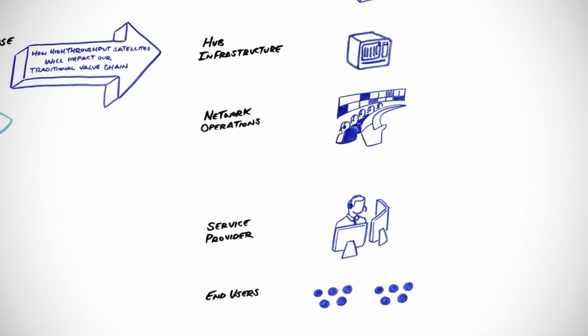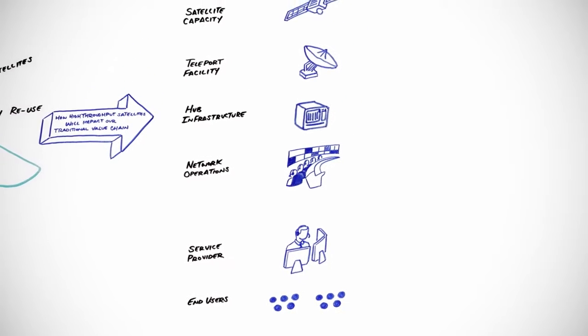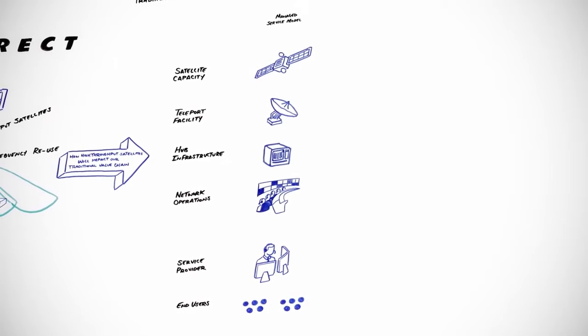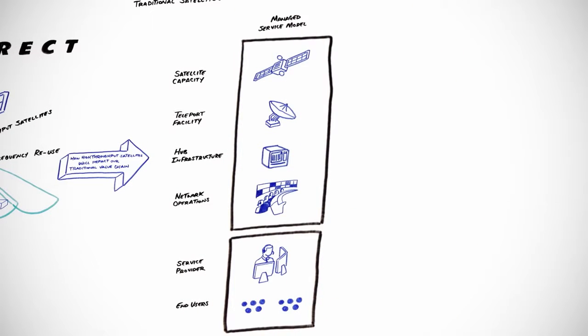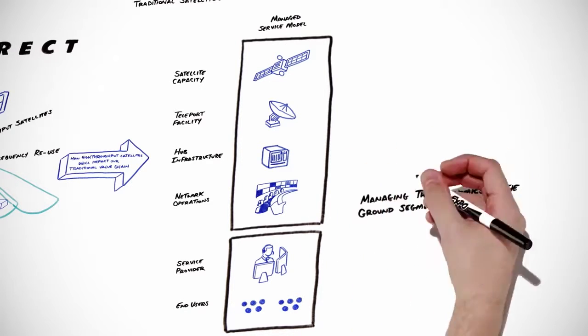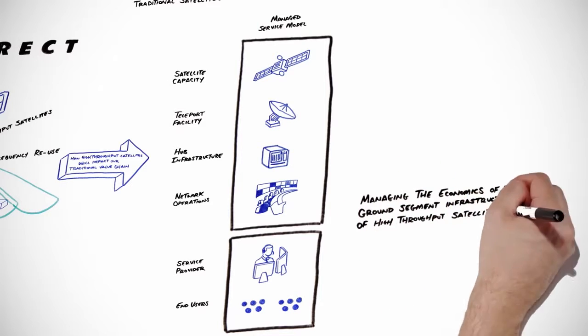The first high throughput satellite offerings that emerged were based on a managed service model. The satellite operator owns and operates all the infrastructure, and the service provider offers a managed service to end users. In this model, satellite operators are managing the economics of the ground segment infrastructure of high throughput satellites.